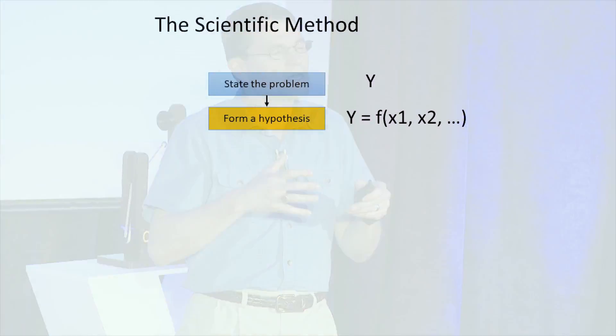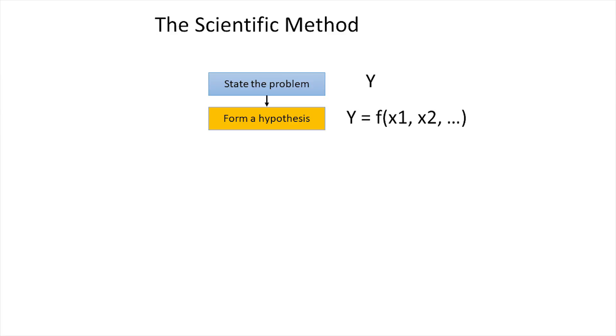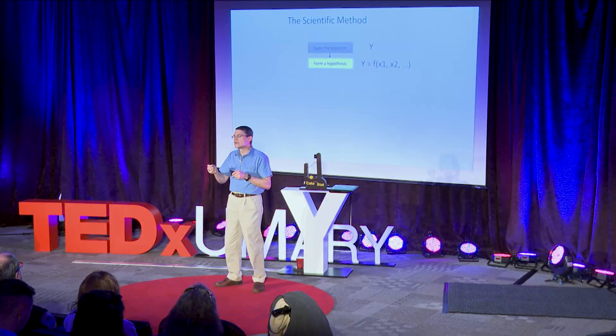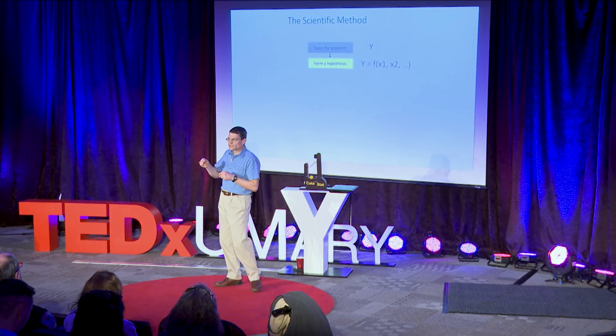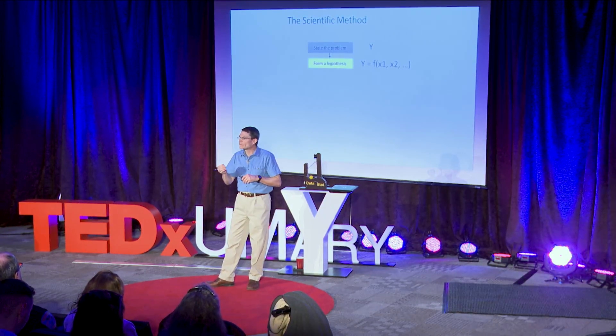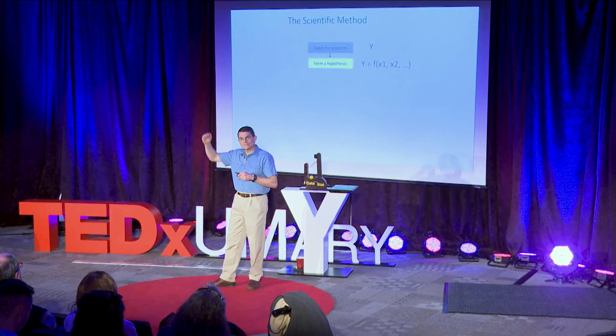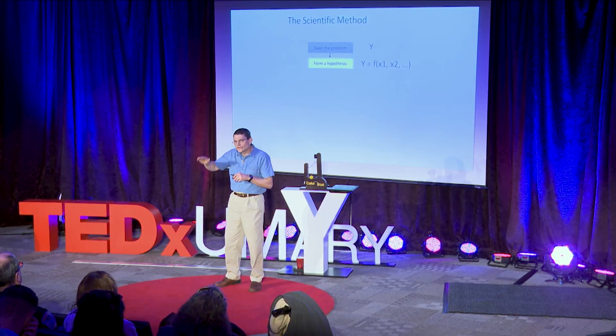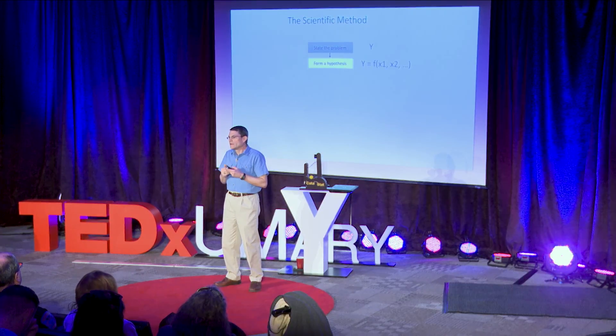Your hypothesis pulls together your theories about potential causes. In geek speak, this is represented as the equation: Y is a function of X, where Y is the problem, X are the potential causes, and F is the strength and direction of the relationship between X and Y. For example, the longer you study, the higher your GPA. The harder your courses, the lower your GPA. Showing up for class may have a large impact on that GPA, where playing on a sports team may only have a small impact.